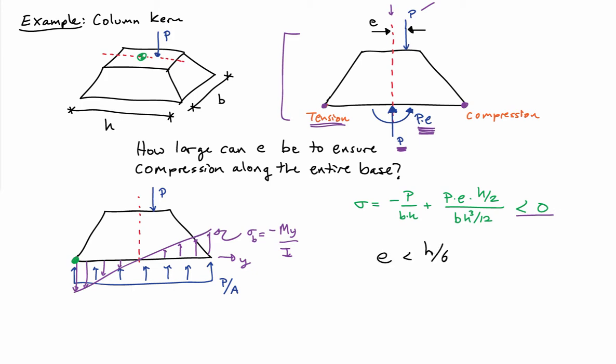I can solve this relationship, and what I see is that E needs to be less than H over 6. So there's a geometric constraint on how large E can be to ensure that I have compression across the entire base.